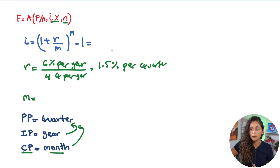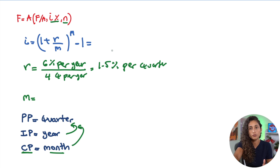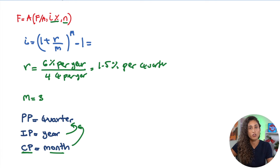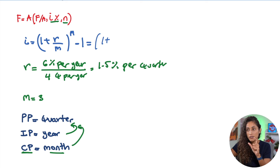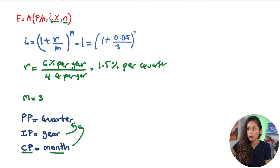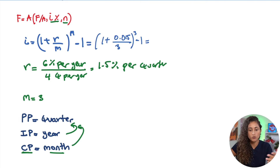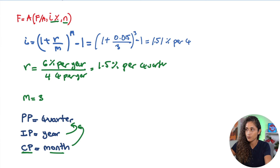For m — the number of compounding periods per payment period — the compounding period is monthly and the payment period is quarterly, so we ask how many months are in a quarter: 3. So m = 3. Plugging into the effective interest rate equation: i = (1 + 0.015/3)^3 − 1, then multiply by 100. This gives us an effective interest rate of 1.51% per quarter.